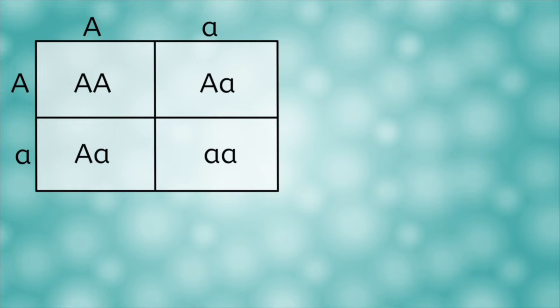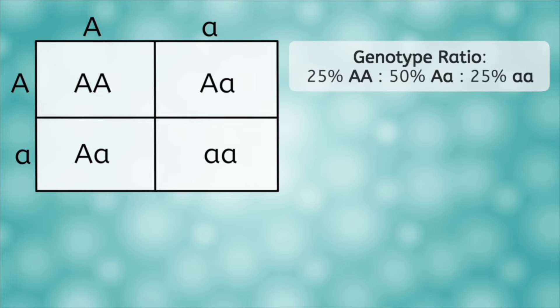From our results, we see that one out of the four boxes is labeled big A, big A. Two of the four boxes are big A, little a, and one out of four is little a, little a. We could keep these as fractions or change to percentages, which would give us 25% big A, big A, 50% big A, little a, and 25% little a, little a.